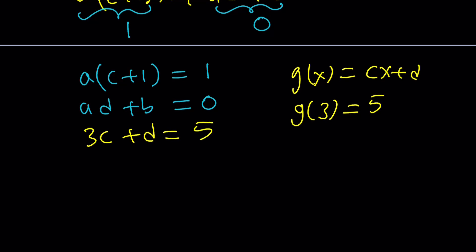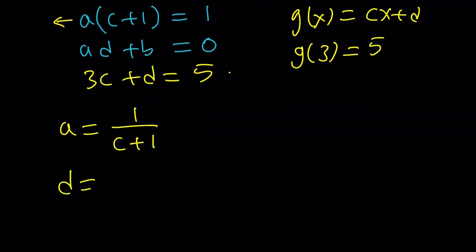Let's see if we can actually solve these equations. So what are we going to do? Here's what I'm going to do. I'm going to isolate a from the first equation. So a can be written as 1/(c + 1). And then I'm going to do a little bit of something. For example, from the third equation, I can isolate d. And d can be written actually in terms of c, which is nice: 5 - 3c.